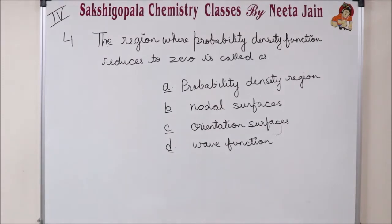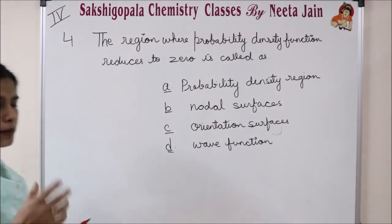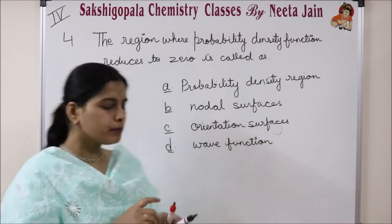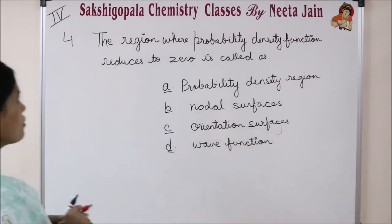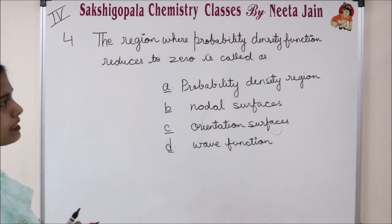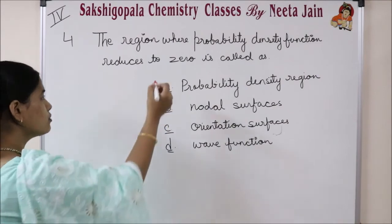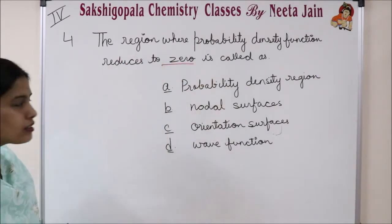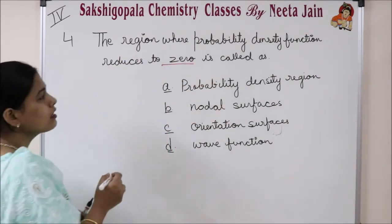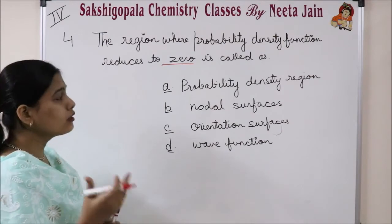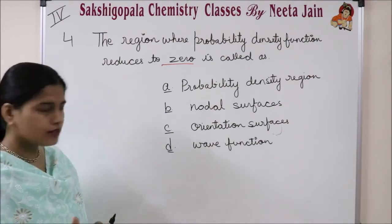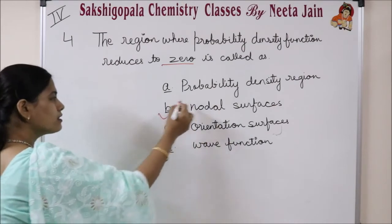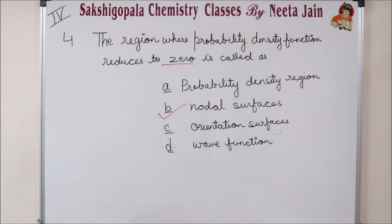Students, always try each question on your own first, then see the answer. Question 4: the region where probability density function reduces to zero is called nodal surfaces. The correct answer is nodal surfaces.